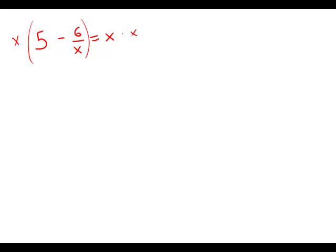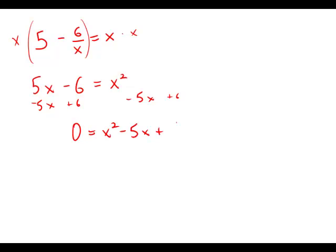On the left side, we get 5x minus 6 because the x cancels the 1 over x. On the right side, we get x squared. Now we have an x squared, so we recognize this properly as a quadratic. We subtract 5x from both sides and add 6 to both sides to get everything on one side, giving us 0 equals x squared minus 5x plus 6.